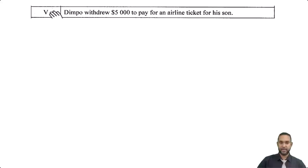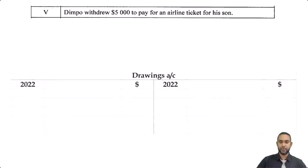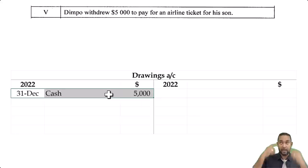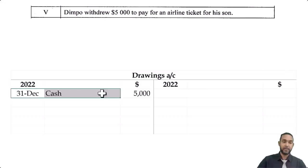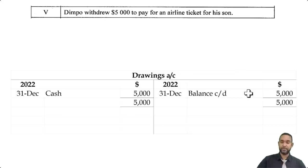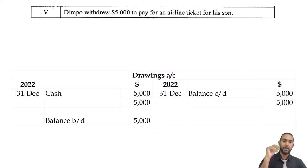Item five: Dimpo withdrew $5,000 to pay for an airline ticket for his son — that's drawings. In the drawings account, cash $5,000 is on the debit side because drawings is a reduction in capital. To decrease capital you debit it. That's the only item, so we balance carried down on the credit side and bring the balance down. We'll need to come back to this when we do items four, five, and six together for the capital account.